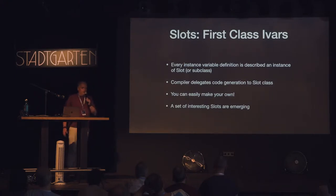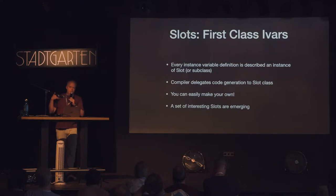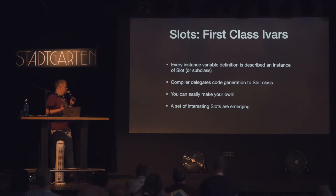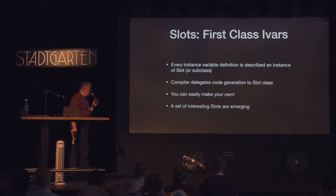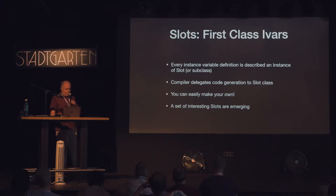The compiler, instead of hard-coding how to read a variable, simply delegates to that slot object. As soon as the compiler sees an instance variable or class variable, it tells that object: I would like to read you, however you want to do that. Because it's a normal class, of course you can do subclasses, and it's quite easy to do. Slowly people are starting to use this, either for demos or in their own code or even in Pharo itself, and a small library of useful slot classes is emerging.